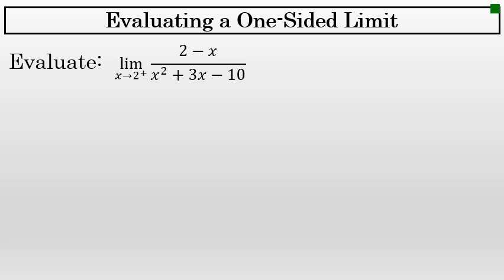Evaluate the limit as x approaches 2 from the right of (2 minus x) all over (x squared plus 3x minus 10). When evaluating a one-sided limit, a good first step is to directly substitute into the expression the value where you're finding the limit at.